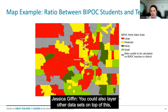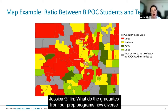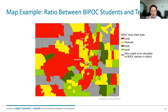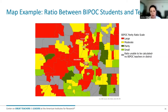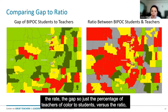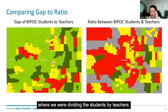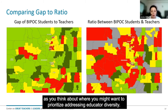You could also layer other datasets on top of this to see conditional factors — like what does the race and ethnicity of the community look like outside of the school walls, how diverse are graduates from prep programs, and are they getting hired in these districts. Here's a side-by-side comparison so you can really see the difference between the gap — just the percentage of teachers of color versus students — and the ratio, where we divide students by teachers. You can see this gives you a very different picture as you think about where you might want to prioritize addressing educator diversity.